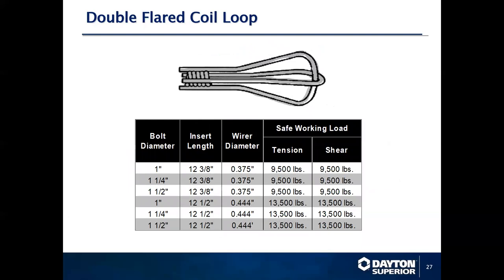The double flared coil loop insert — often referred to as an egg beater — is typically available in larger diameters: one inch, inch and a quarter, and inch and a half. Usually made with heavier wire, the 375 and 444 wire. The 444 wire is the same coil diameter used for coil thread. You can achieve about just over 13,000 pounds safe working load with this product.